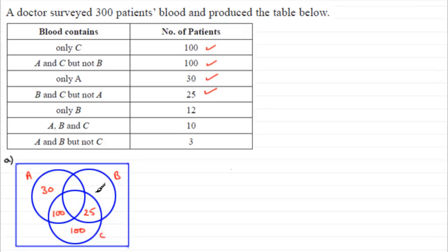Only B is 12, so that's got to be that region there. A, B and C, 10. That's got to be in the middle, all three.